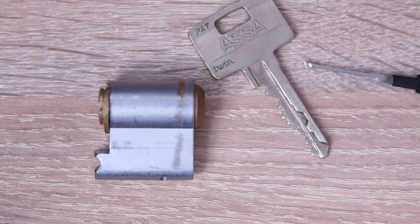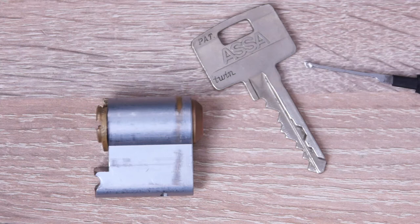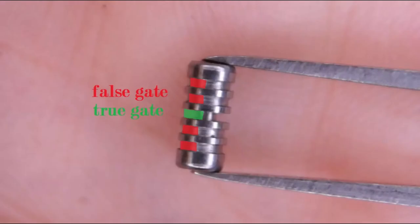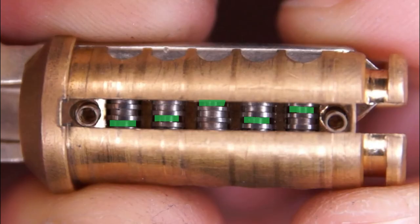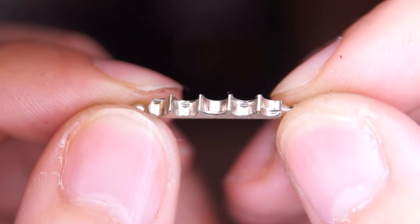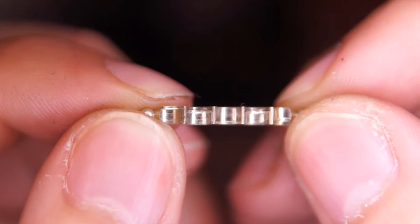But the side pins are a bit special. Normally, if you enter the correct key, all of the true gates of the side pin or slider or finger pin mechanisms line up, so that the sidebar can move into the core. In this case, all side pins are always the same. It doesn't matter what bidding you have, the side pins are always the same, but the sidebar is not. The sidebar has some specific plates and cutouts for the true gates in a specific height, so the sidebar is the component that varies depending on the bidding of the key.